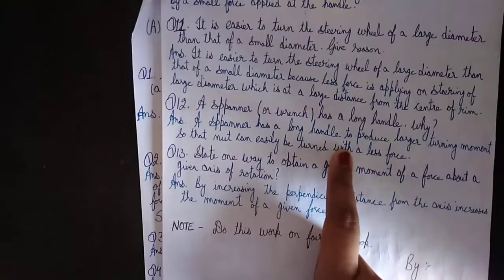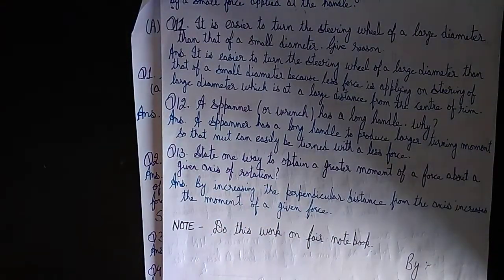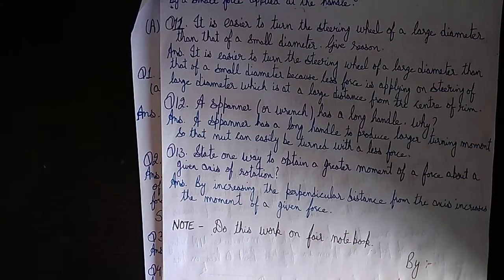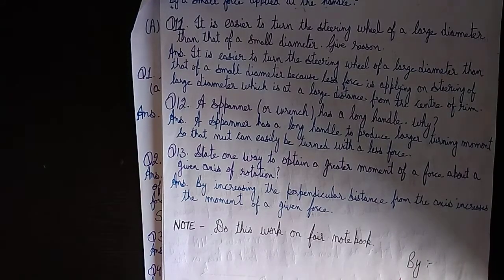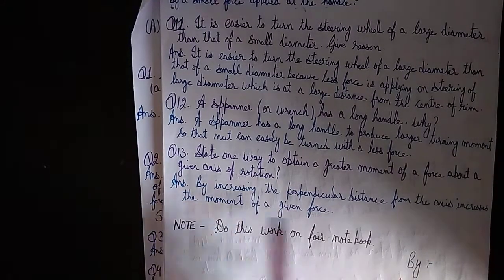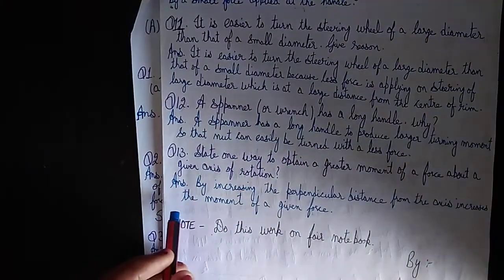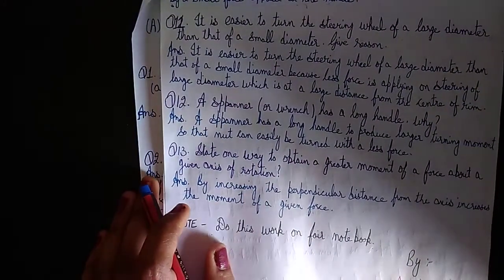State one way to obtain a greater moment of force about a given axis of rotation: by increasing the perpendicular distance from the axis, the moment of the given force increases.